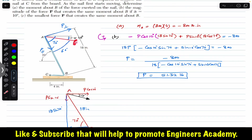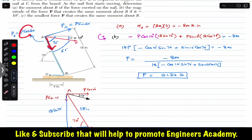Since force P makes 60 degrees with bar AB, the parallel component is P cos(60°) and the perpendicular component is P sin(60°). The component along AB passes through point B, so its moment arm is zero and it produces no moment about B. Only the perpendicular component P sin(60°) produces a moment.